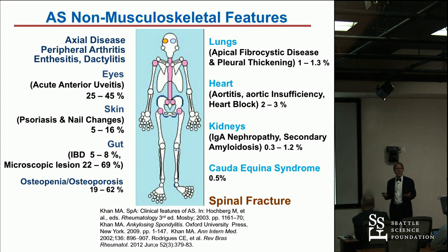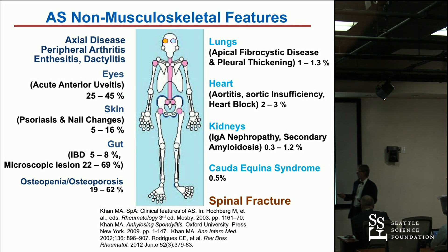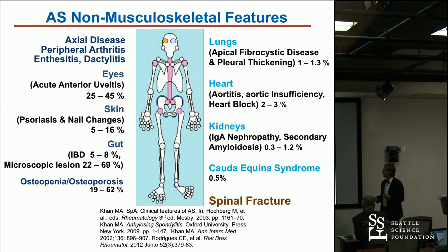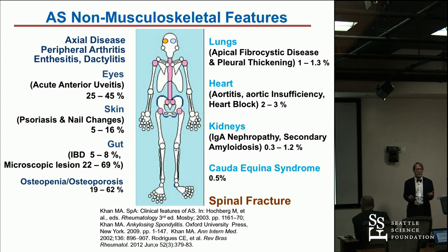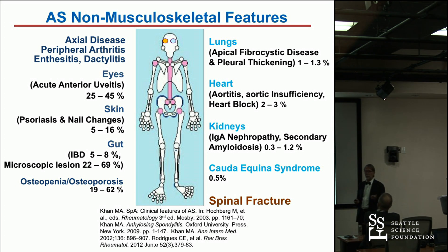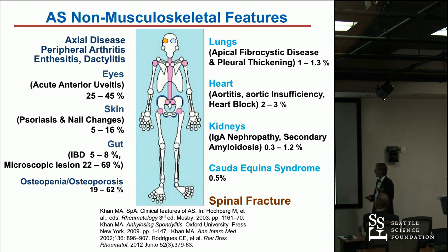There are a number of other features that go along with the condition, including uveitis, psoriasis, and gut involvement. IBD is overtly present in 5% to 8% of patients, but if you come into clinic in Ghent, Belgium with evidence of spondyloarthritis, you're guaranteed a colonoscopy — and roughly 60% of patients will have microscopic evidence of inflammatory change in the gut. Osteoporosis is a prominent problem, and one of the main reasons for morbidity and mortality is fractured necks. There can also be lung involvement, aortic root involvement, less often amyloidosis, cauda equina syndrome, and spinal fracture.